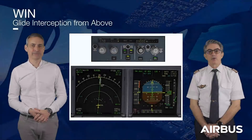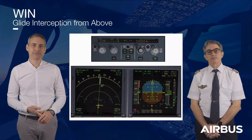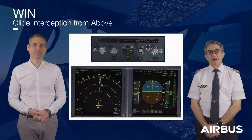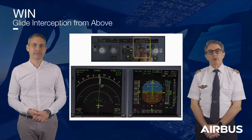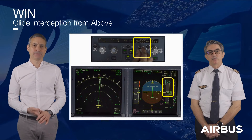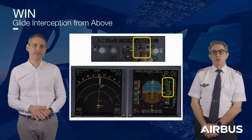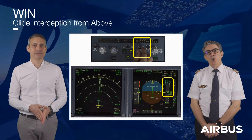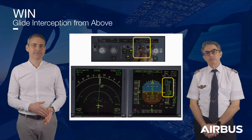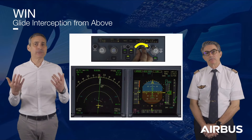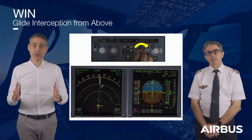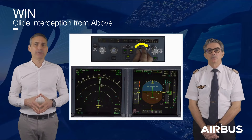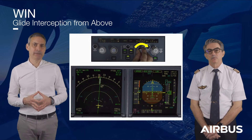Thank you for making that clear, Pierre. Now that I am established on the localizer, I can set the FCU altitude above the current aircraft altitude. Why can I not select an FCU altitude below and continue in open descent?